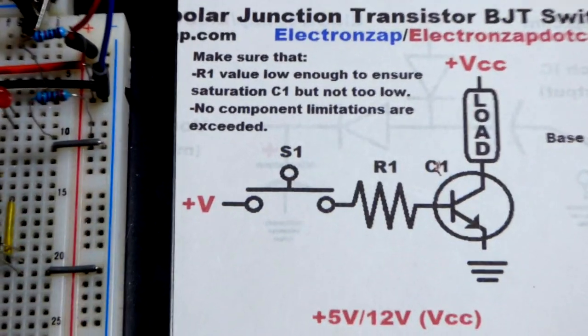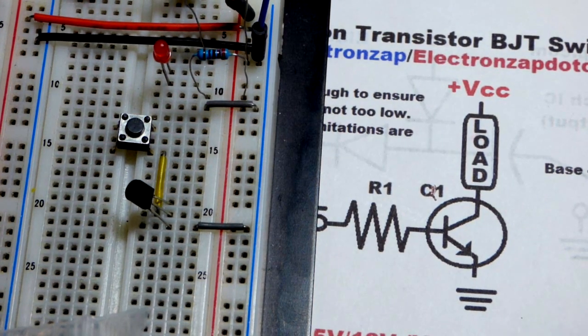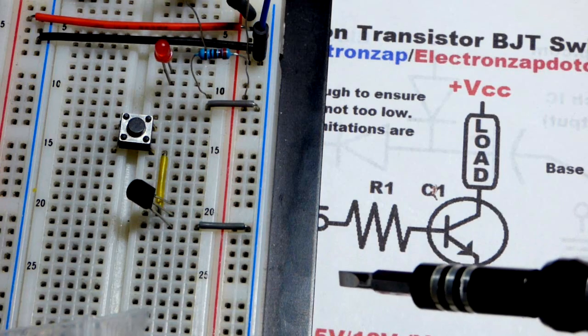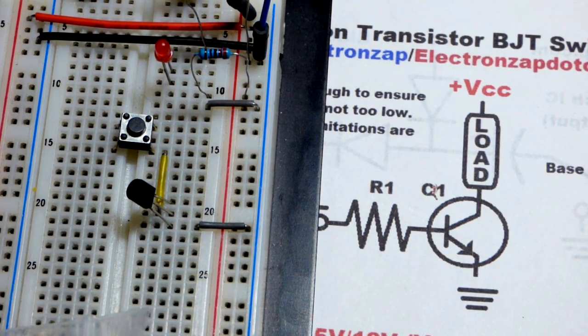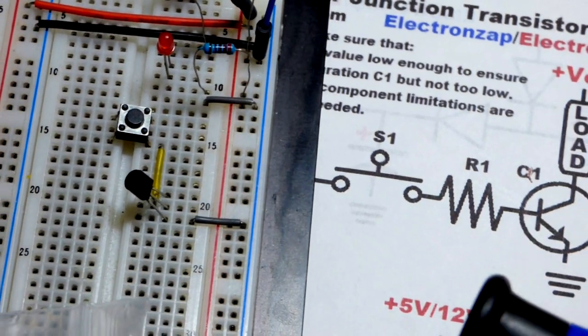And then the collector goes up one row right there. And so we can kind of zoom in and take a look at that really quick. So I actually have in this circuit the switch and the resistor swapped. So I'm just going to keep going with that. But you don't always have to put them in the order that you see them.